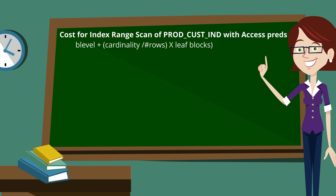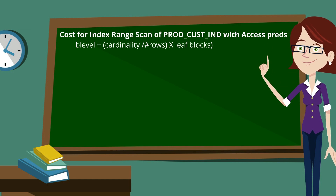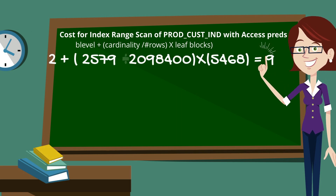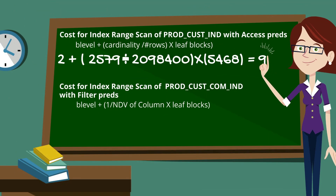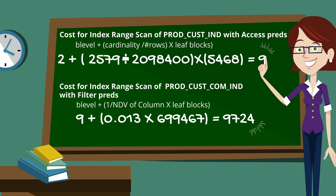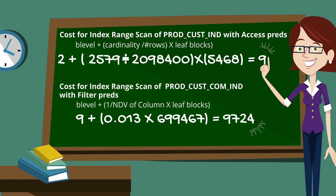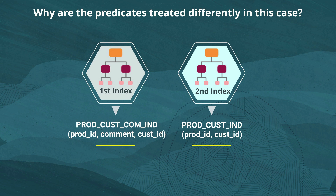Let's look at the cost calculation used for both of these index range scans so we can see exactly how this works in practice. The cost for the index range scan on the prod customer index — the one where we're using both where clause predicates as access predicates — is calculated using this formula. We don't expect you to remember these formulas, but I'm showing it so I can prove where the cost of nine comes from for this index range scan. The formula used to calculate the cost for the index range scan on the prod customer com index is quite different. Remember, this time only one where clause predicate is used as an access predicate; the other is used as a filter predicate. When I supply the statistics to that formula, you'll notice we get a much higher cost of over 9,000.